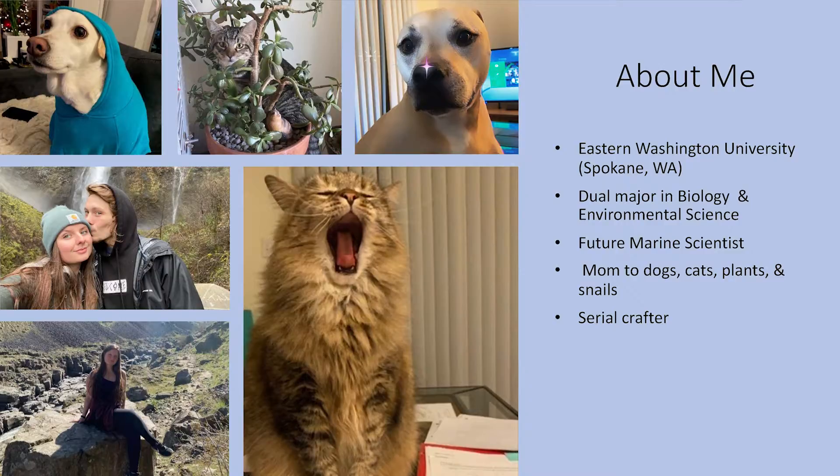So a little bit about me — sorry for the cuteness overload of all my animals. I am from Eastern Washington University, I'm a dual major in biology and environmental science, and I'm proudly a future learning scientist. I'm also a mom to many dogs, cats, plants, and about 30 aquatic snails, and I'm also a serial crafter — I crochet and I paint, and I even for a short time did arrowhead making, so I'm into a little bit of everything.